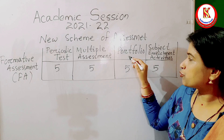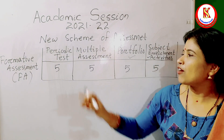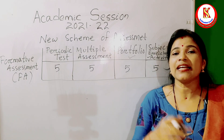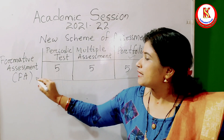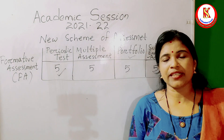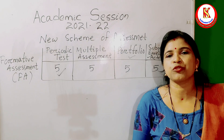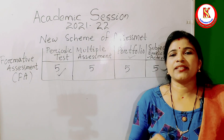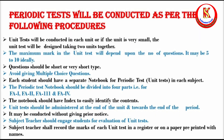Now, what is periodic test? It is also known as the unit test. As per the board's instruction, five marks are to be given for periodic test in each formative assessment. After each unit, we have to conduct a small test known as the periodic test, but we have to count marks out of five. The board's instruction states: periodic test will be conducted in each subject and total marks in all subjects are to be converted out of five marks for each formative assessment.